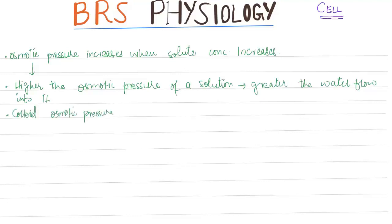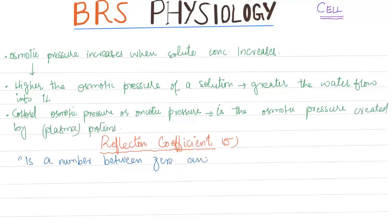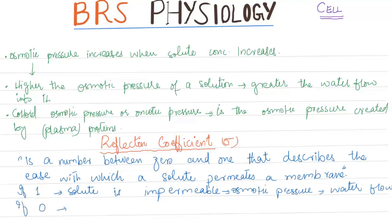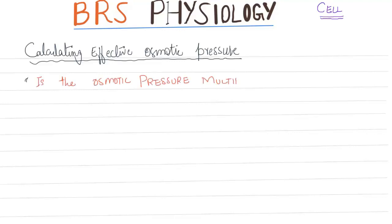Colloid osmotic pressure, or oncotic pressure, is the osmotic pressure created by proteins such as plasma proteins. The reflection coefficient is a number between 0 and 1 that describes the ease with which a solute permeates a membrane. If the reflection coefficient is 1, the solute is impermeable and creates an osmotic pressure causing water flow — for example, serum albumin. If it is 0, the solute is completely permeable and exerts no osmotic pressure — for example, urea. Effective osmotic pressure is calculated by multiplying the Van't Hoff osmotic pressure by the reflection coefficient.